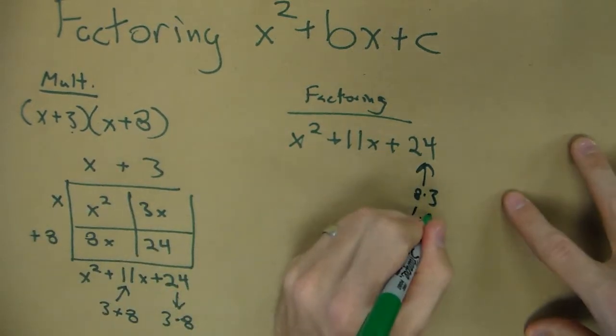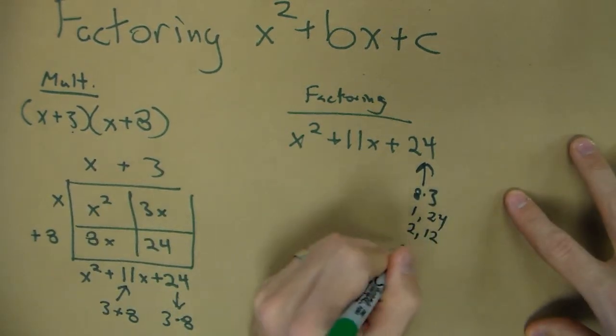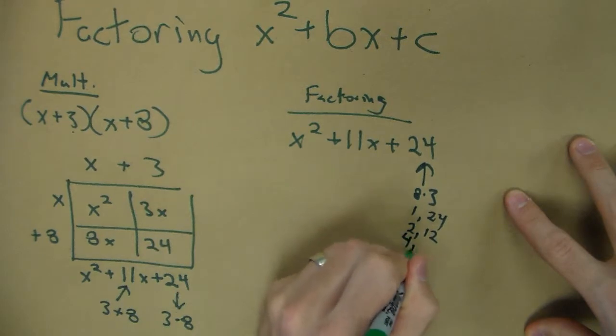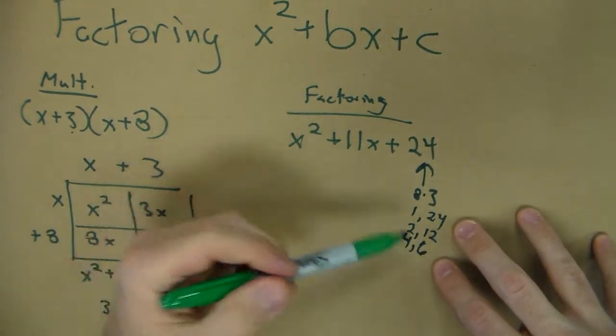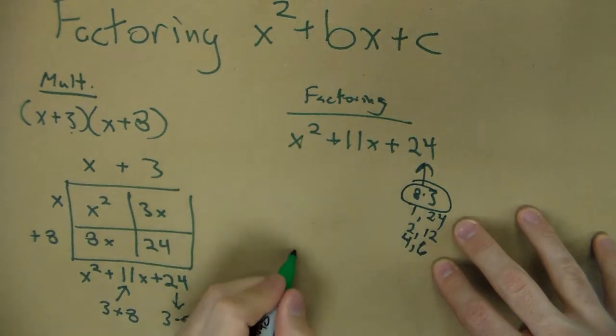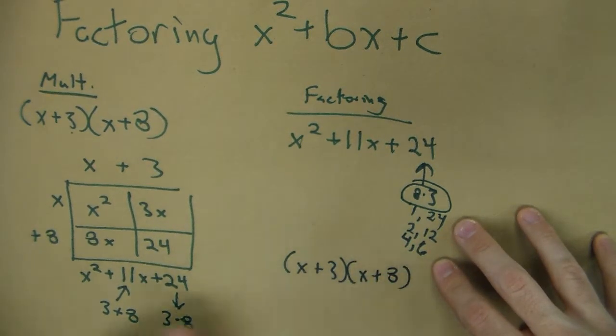But the trick is that's not the only option. 24 is also 1 and 24, 2 and 12, 4 and 6, other options we have. But it's important that we say that's what we want to choose. So we'll do (x+3)(x+8).